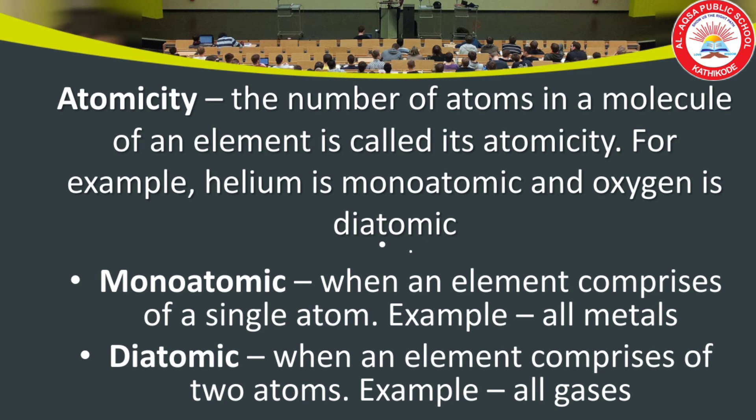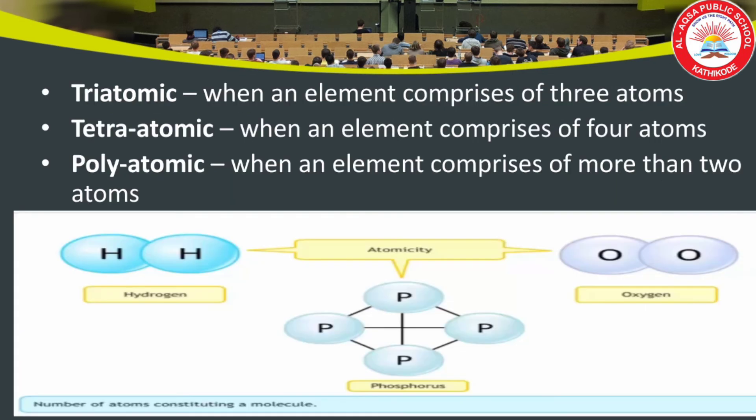Monoatomic means when an element comprises a single atom — for example, all metals are monoatomic. Diatomic means when an element comprises two atoms — for example, gases like hydrogen and nitrogen. Triatomic means when an element comprises three atoms. Tetraatomic means when an element comprises four atoms. Polyatomic means when an element comprises more than two atoms.